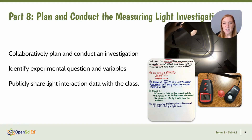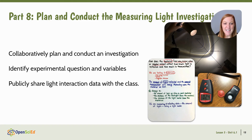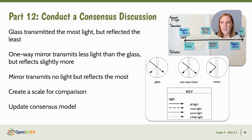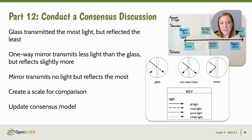On day two, students plan an investigation and work through identifying experimental questions and variables together before conducting the experiment. We want to keep it as controlled as possible. The teacher creates a public record of the experimental question and variables so that students are consistent from group to group. We utilize light meters to measure actual quantitative data of the light reflected and transmitted. On day three, we have a consensus discussion where we identify patterns in the data.